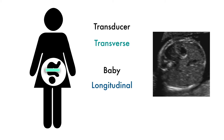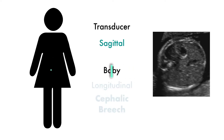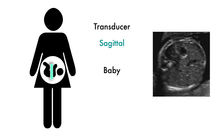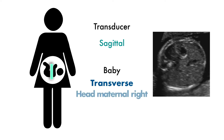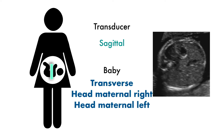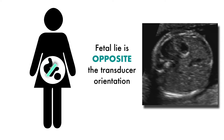Once we establish that, we only have two options: cephalic or breech. What if our probe is sagittal or longitudinal? If our probe is longitudinal and the baby still looks like a circle — axial view of the abdomen — the baby is perpendicular to our probe, so the baby must be lying transverse. Now we only have two options: head maternal right or head maternal left. Key point: if they're showing you an axial view of the abdomen, the fetal lie is opposite the transducer orientation. They must tell you the transducer orientation in the question, and then you switch it for the fetal lie.